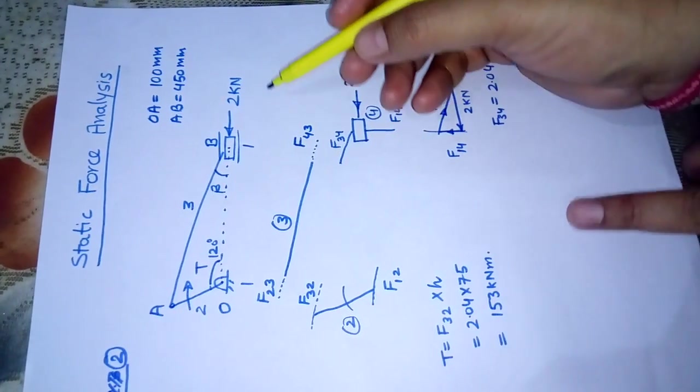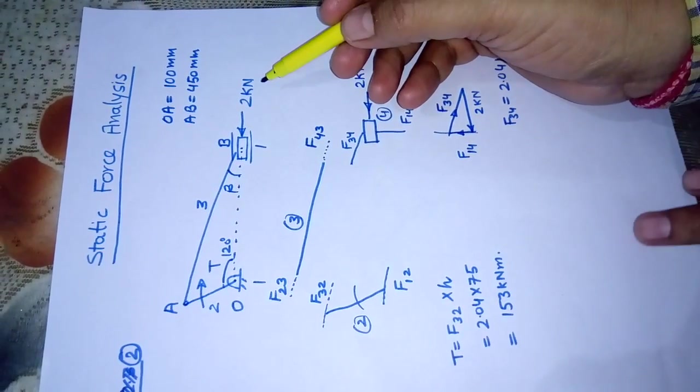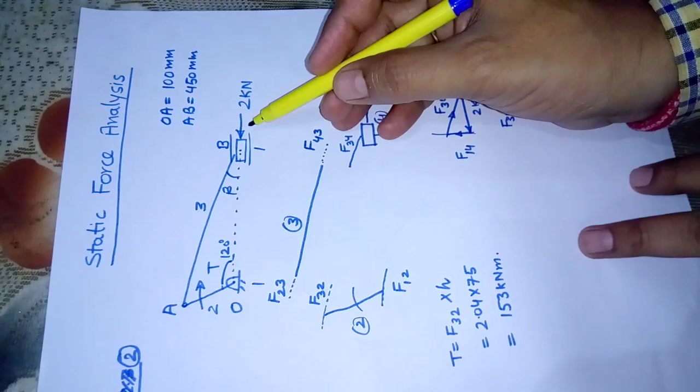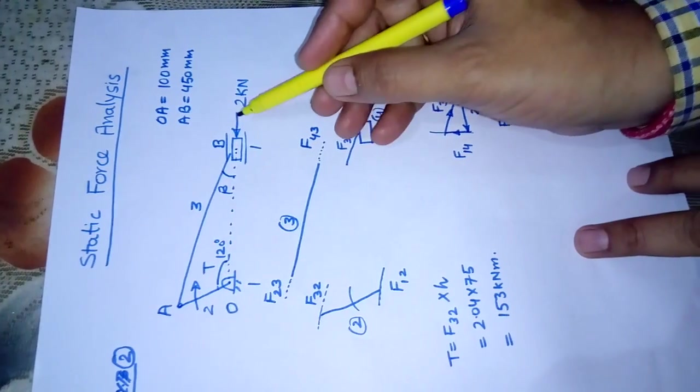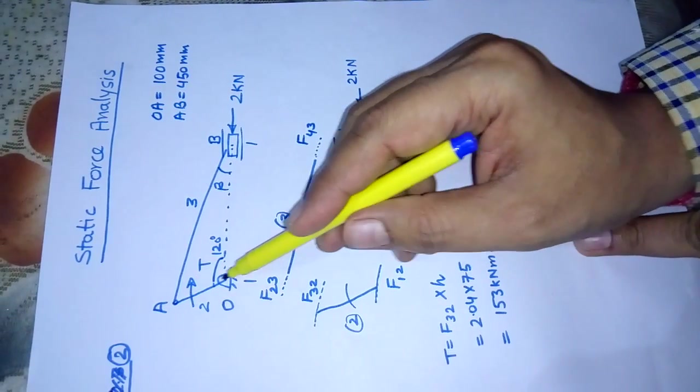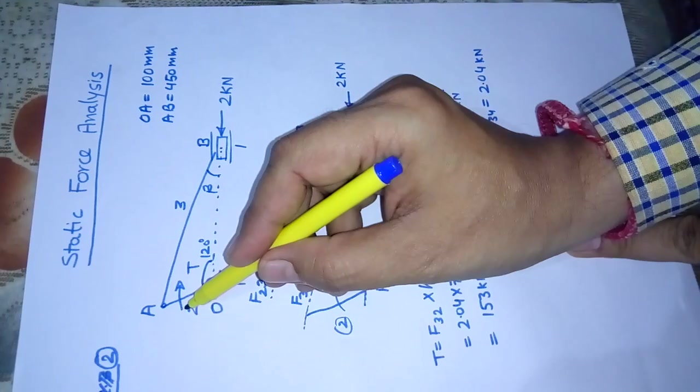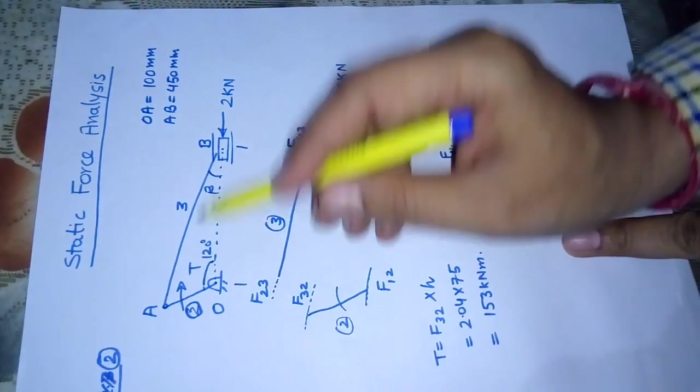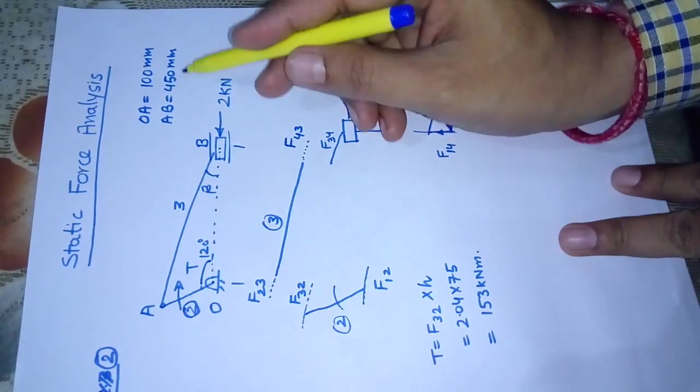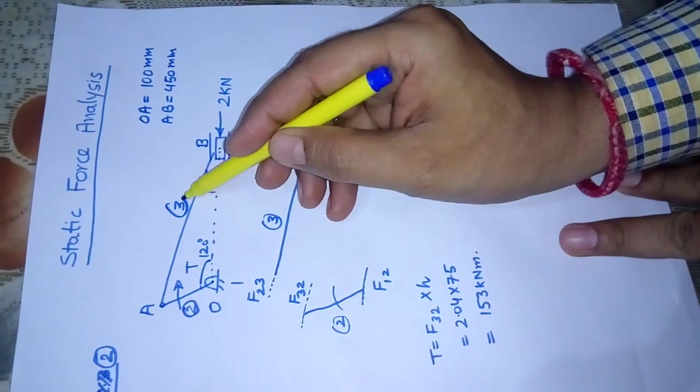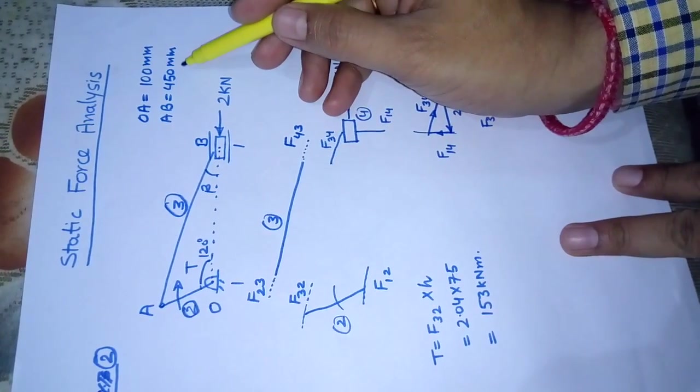We have picked an example where one single force is acting at the piston, 2 kilonewtons acting like this. The dimensions are given: link number 2 is OA, which is 100 mm long, and link number AB is link number 3, which is 450 mm.